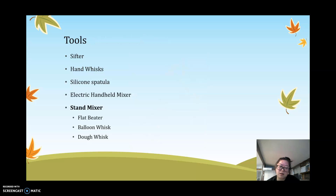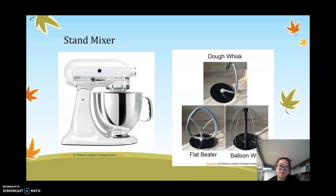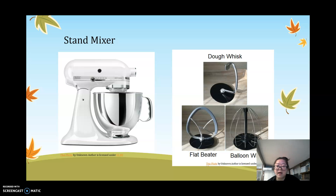The last common tool is the stand mixer. A stand mixer is more convenient but usually more expensive. Stand mixers typically come with three attachments: a dough hook, a flat beater, and a balloon whisk. The flat beater resembles a silicone spatula, and the balloon whisk functions like a hand whisk but automatically. The dough hook is designed to knead bread dough, which has a high gluten content, and prevents the dough from sticking — replacing the need to knead by hand.